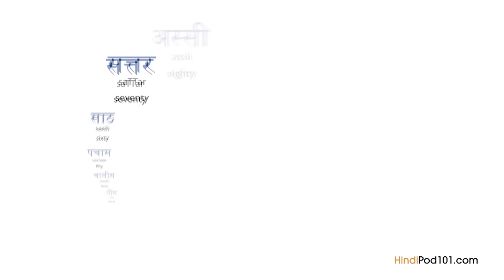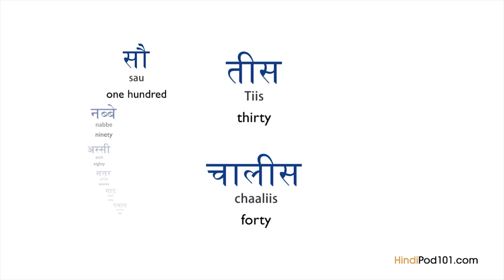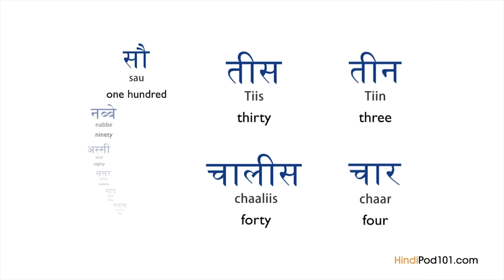While you have to memorize many of the numbers, there is a trick. Notice that 30 is Tees and 40 is Chalees. Do you remember what 3 and 4 are in Hindi? 3 is Teen and 4 is Chaar. The sound of Teen (3) is used in Tees (30). Similarly, the sound Cha in Chaar (4) is used in Chalees (40). 5 in Hindi is Paanch while 50 is Pachaas — the common sound is Paa.